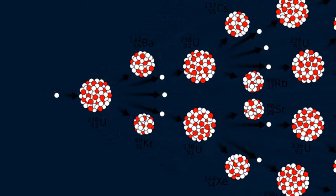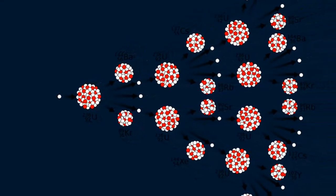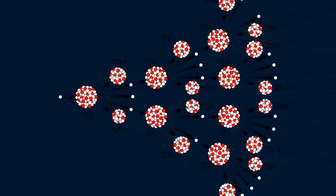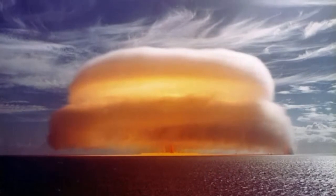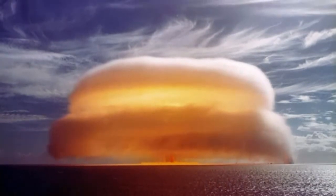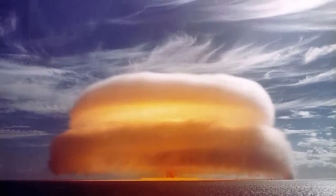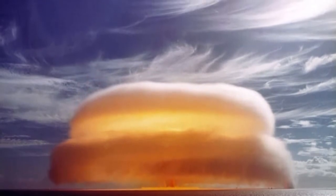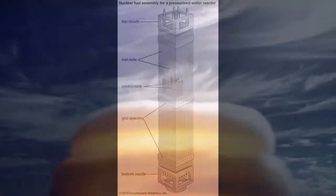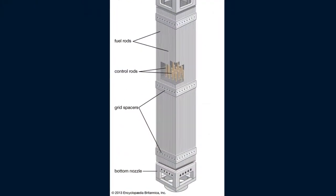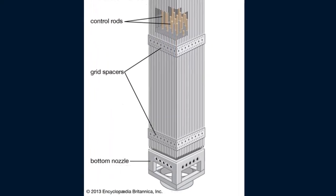If the supply of fissionable material is sufficient, and if the reaction is allowed to proceed in an uncontrolled manner, an enormous amount of energy would be released in the form of an atomic explosion. In a nuclear power plant, however, the fission reaction is controlled by moving neutron-absorbing rods into or out of the nuclear reactor. The result is a controlled nuclear chain reaction that releases great amounts of heat.